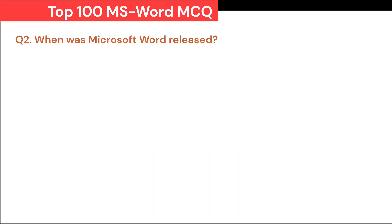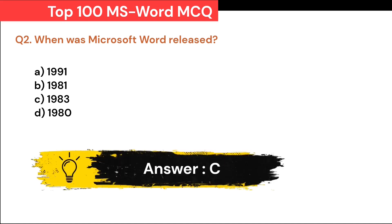When was Microsoft Word released? A. 1991. B. 1981. C. 1983. D. 1980. Correct answer is C. 1983.